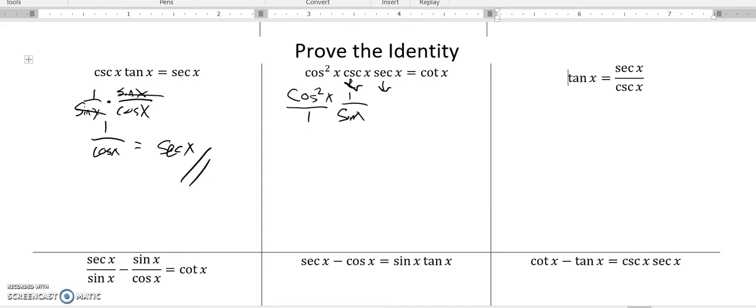Let me manipulate this to make it cotangent. I notice this cosine would divide out one of those cosines, so now what's left is cosine times one on the top, sine times one on the bottom, which is cosine over sine, which is cotangent.